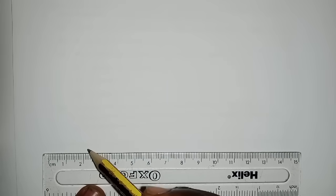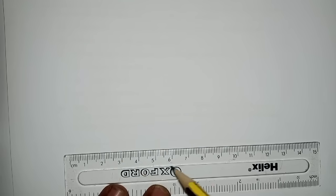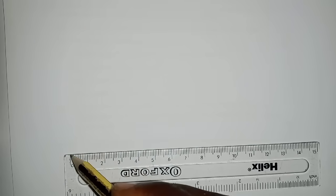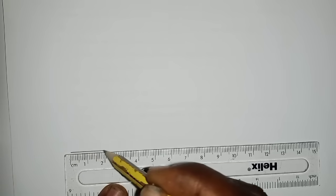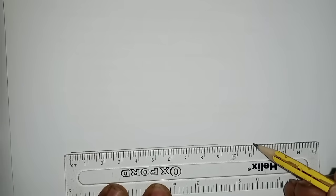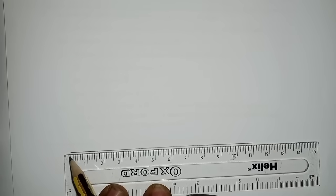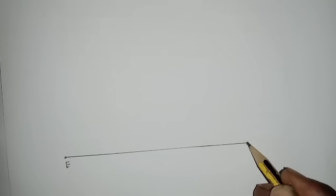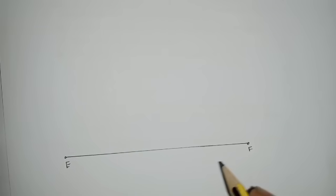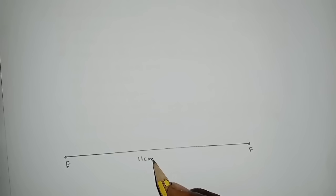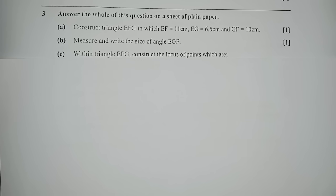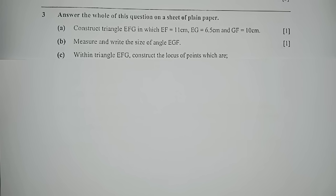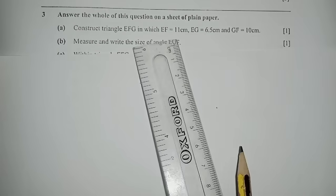So we'll do this from here — from zero to 11. So 11 is here and zero is here. This is our point E over here and our point F is here. Don't forget to put the measurements — this is the 11 centimeters.